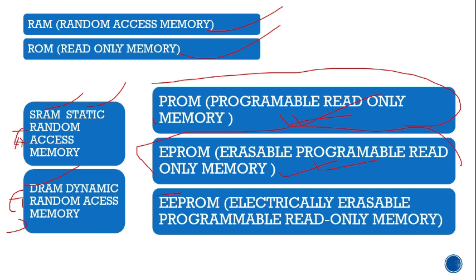EEPROM (Electrically Erasable Programmable Read-Only Memory) allows individual bytes to be erased and reprogrammed. Floating gate transistors are used to store data in this type. Unlike standard ROM where you cannot read or write, in EEPROM you can erase or reprogram data individually in bytes without displacing other data.